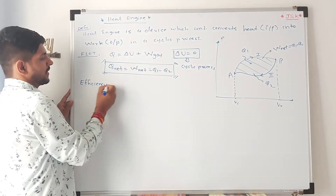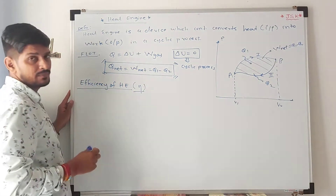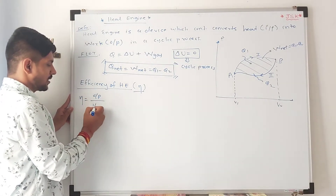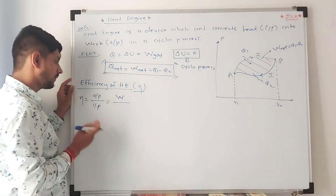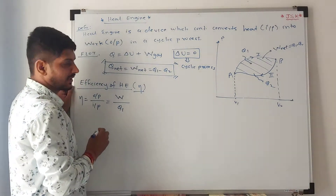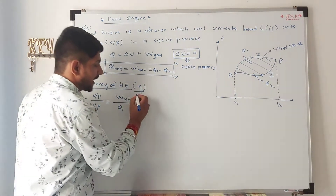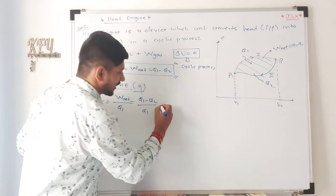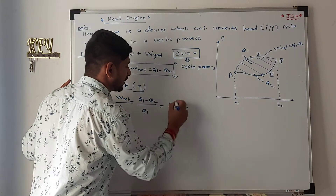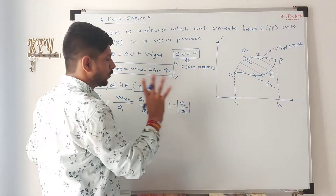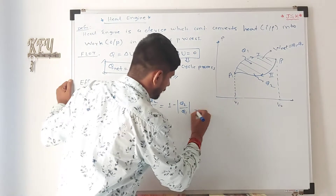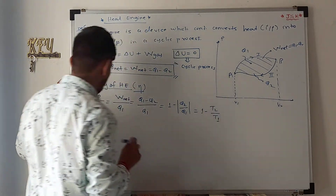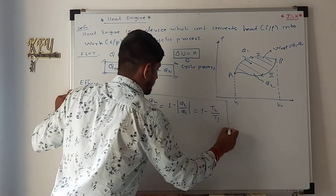So if I want to find efficiency — what is the efficiency of the heat engine? Efficiency is basically output by input, multiplied by 100 for percentage. The output of a heat engine is work done per cycle, divided by heat supplied per cycle. Net work done per cycle is Q1 minus Q2 upon Q1. And we have proved that Q2 by Q1 can be replaced with T2 by T1. So efficiency = 1 minus T2 by T1. This is the formula for efficiency of a heat engine.